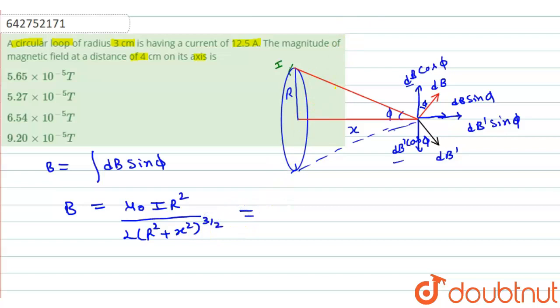Now we can put the values. Here mu naught will be 4 pi into 10 to the power minus 7, and i is given 12.5 ampere, and r which is 3 centimeter